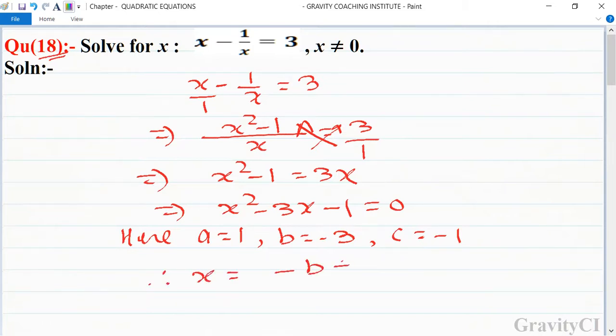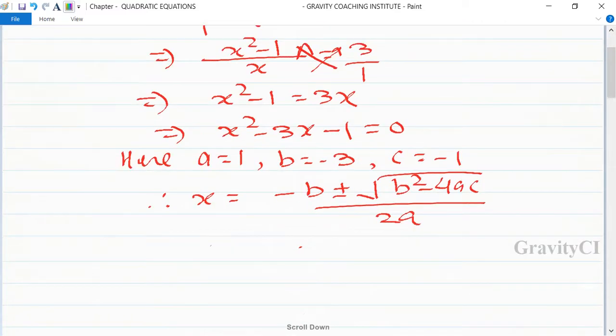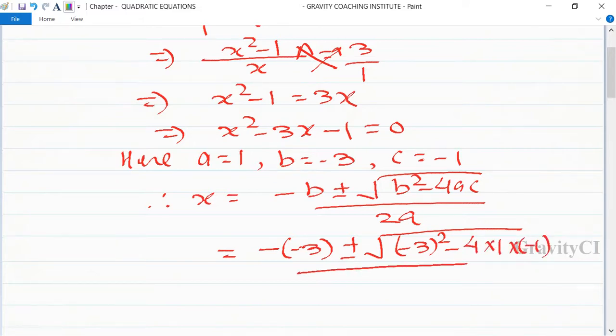Therefore x is equal to minus b plus minus root under b squared minus 4ac upon 2a. This equals minus 3 plus minus root under minus 3 whole squared minus 4 into 1 into minus 1 upon 2 into 1.